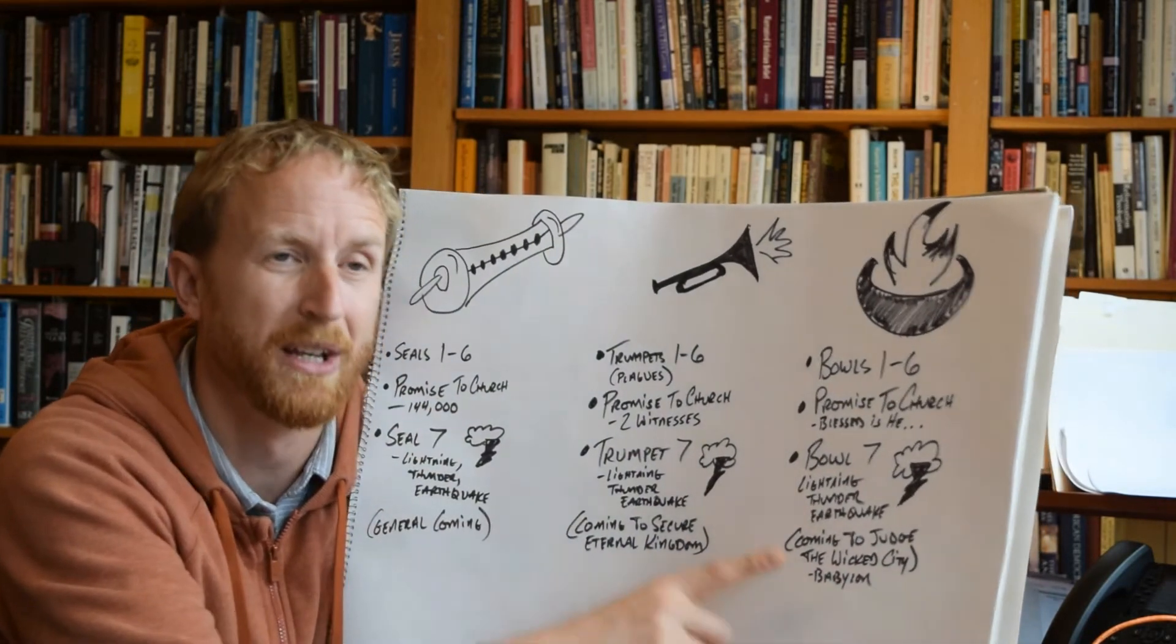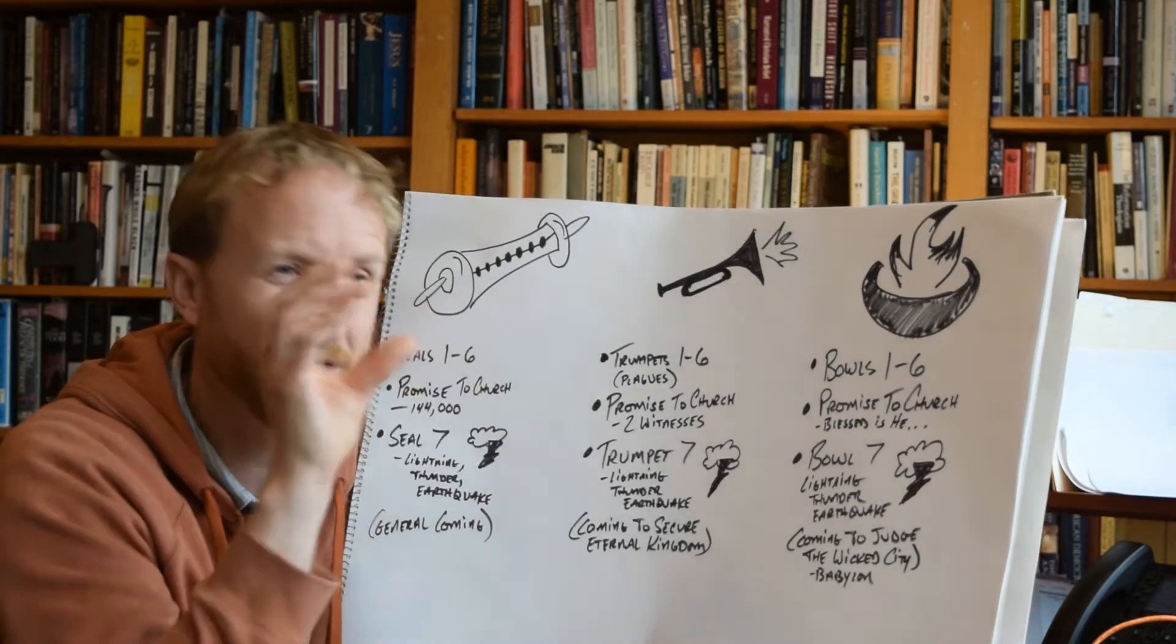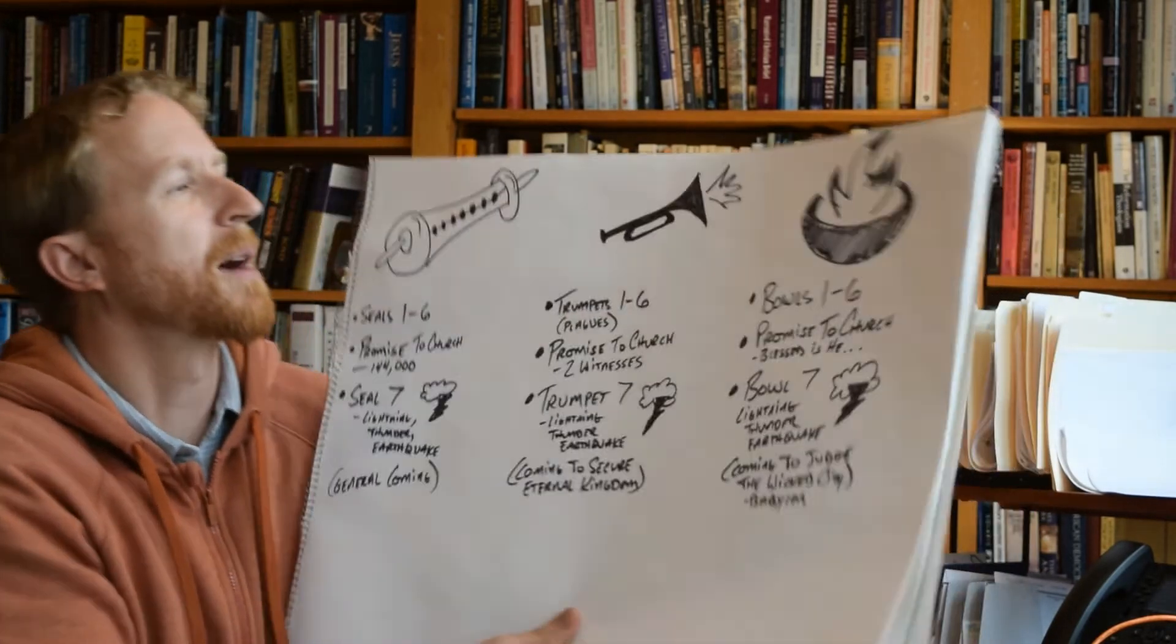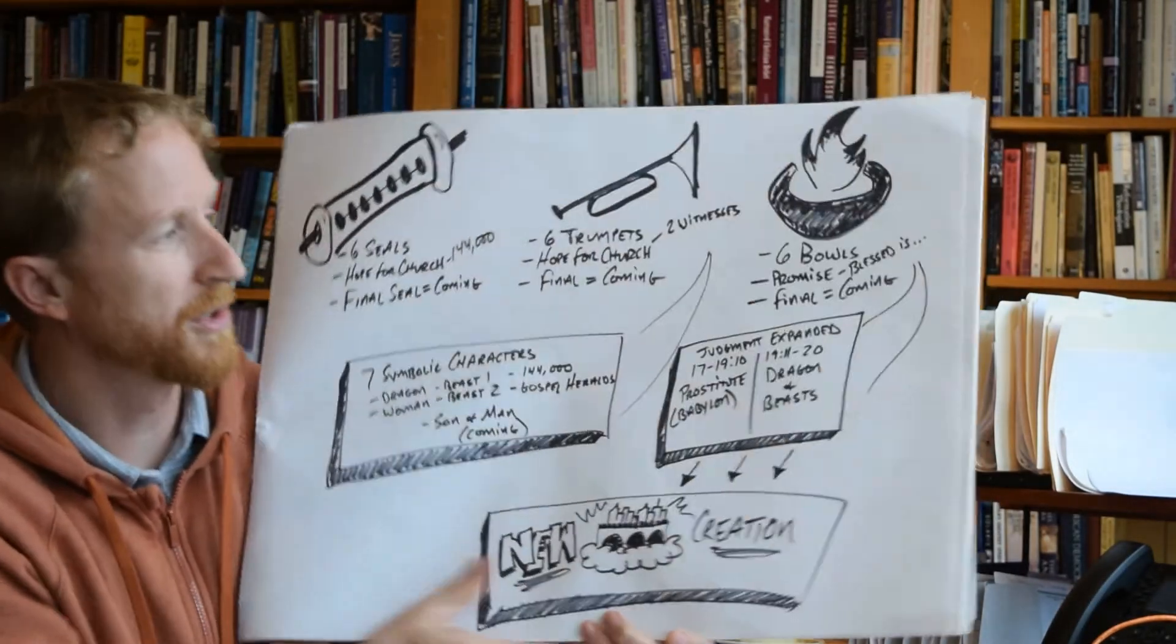So, there it is. There's your three main cycles in the meat of the book, chapter 6 through 16. But I thought I'd just show you, I go ahead and round out the book and show you how the rest of the book fits in with those three cycles.